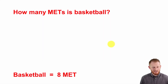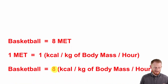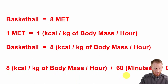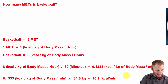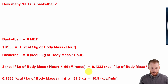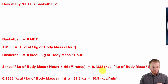We just answered the question of how many METs basketball is — it's worth eight METs. One MET equals one kilocalorie per kilogram of body mass per hour of activity, so basketball being eight METs means it's worth eight kilocalories per kilogram of body mass per hour. I'm going to convert this to a per-minute unit first: eight kilocalories per kilogram per hour divided by 60 minutes gives us 0.1333 kilocalories per kilogram of body mass per minute.